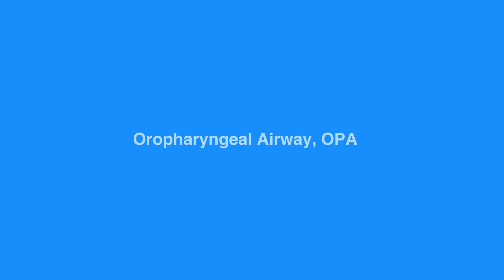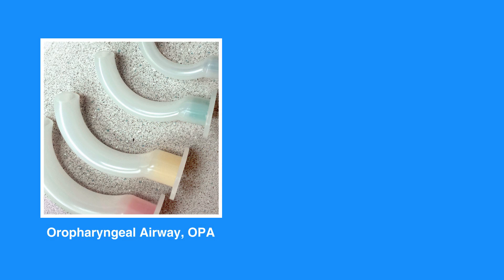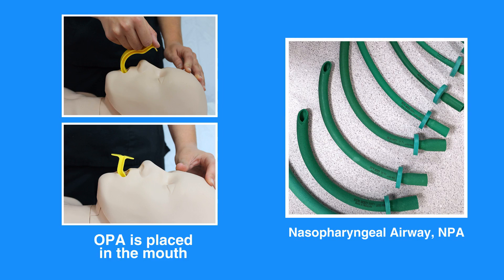Basic airway equipment includes the oropharyngeal airway, or OPA, and the nasopharyngeal airway, or NPA. The primary difference between an OPA and an NPA is that an OPA is placed in the mouth while an NPA is inserted through the nose. Both airway equipment terminate in the pharynx.